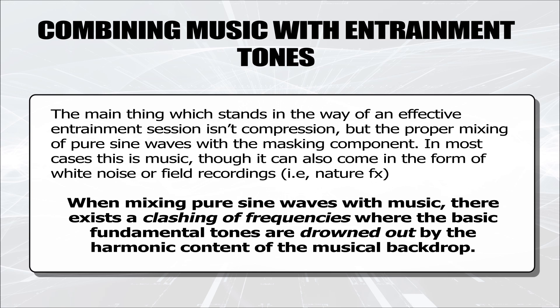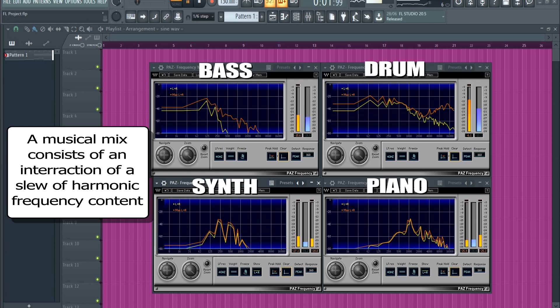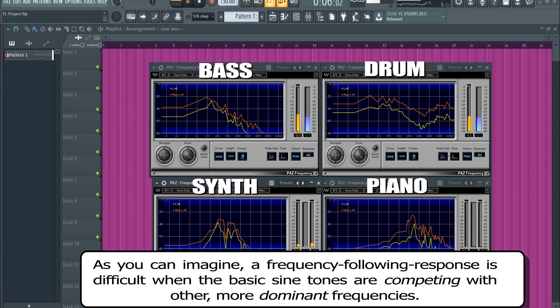The main thing that stands in the way of an effective entrainment session isn't compression, but the proper mixing of pure sine waves with the masking component. In most cases this is music, though it can also come in the form of white noise or field recordings. When mixing pure sine waves with music, there exists a clashing of frequencies where the basic fundamental tones are drowned out by the harmonic content of the musical backdrop. A musical mix consists of an interaction of a slew of harmonic frequency content, making a frequency following response difficult when the basic sine tones are competing with other, more dominant frequencies.